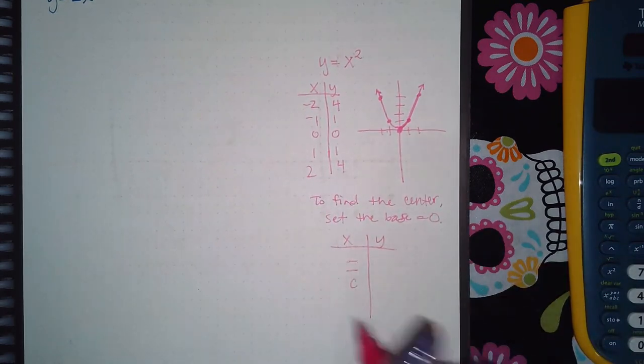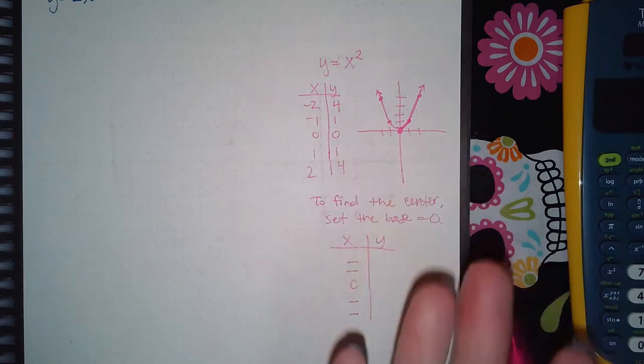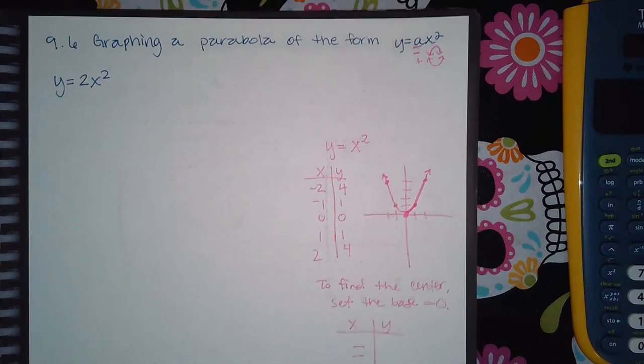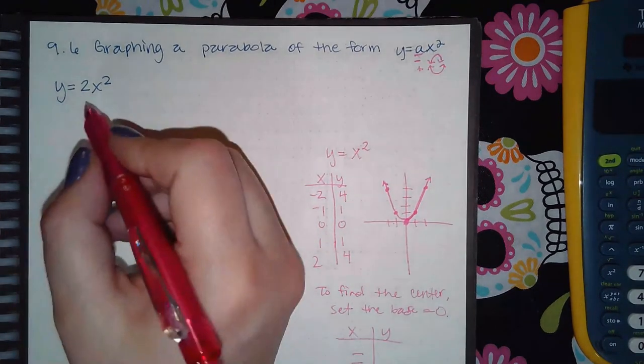Once you have that, whatever the base, whatever you got from doing this, that would be your center. Then pick two x values to the left, two x values to the right, plug them into your equation and you'll get your table values which you can plot.